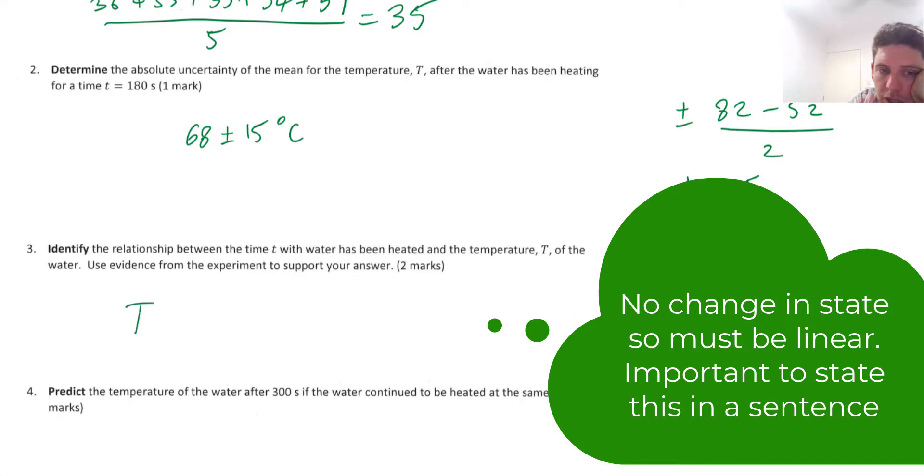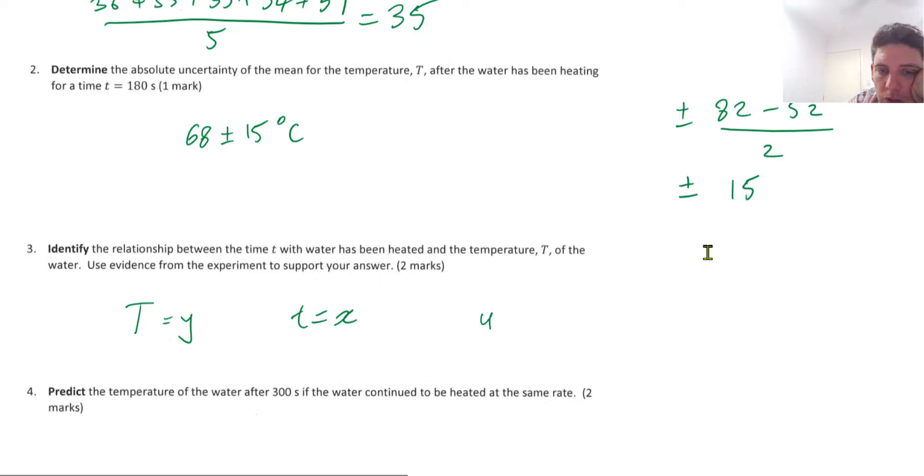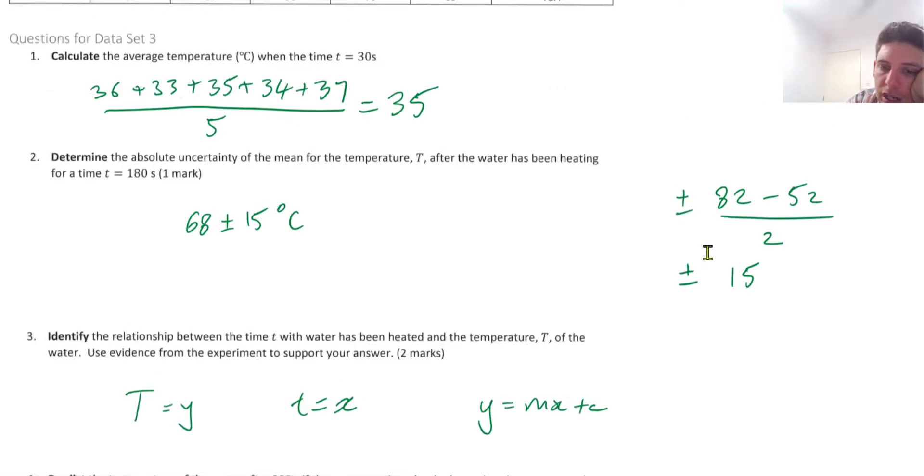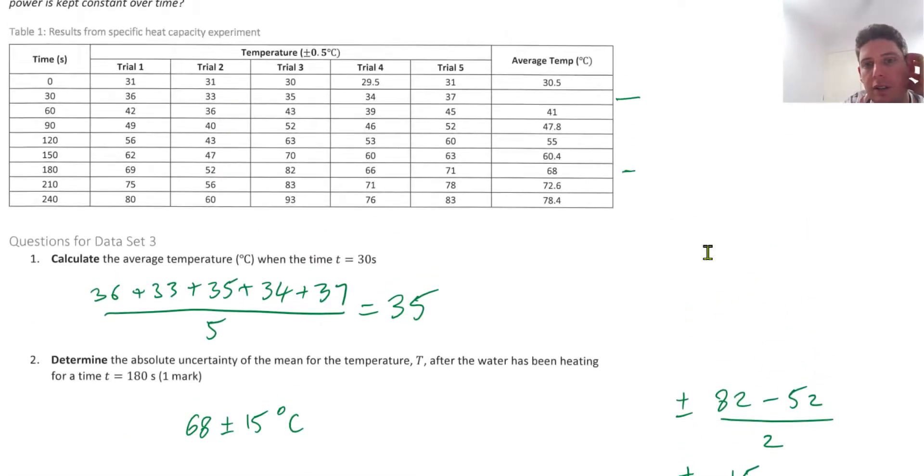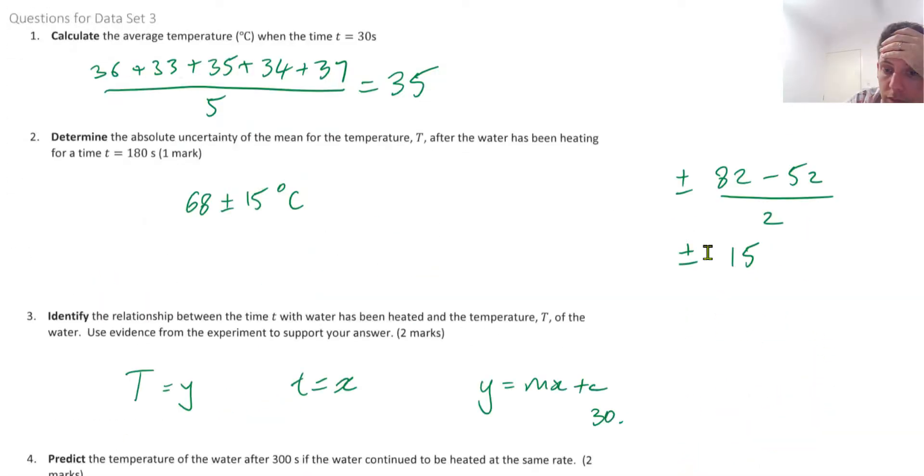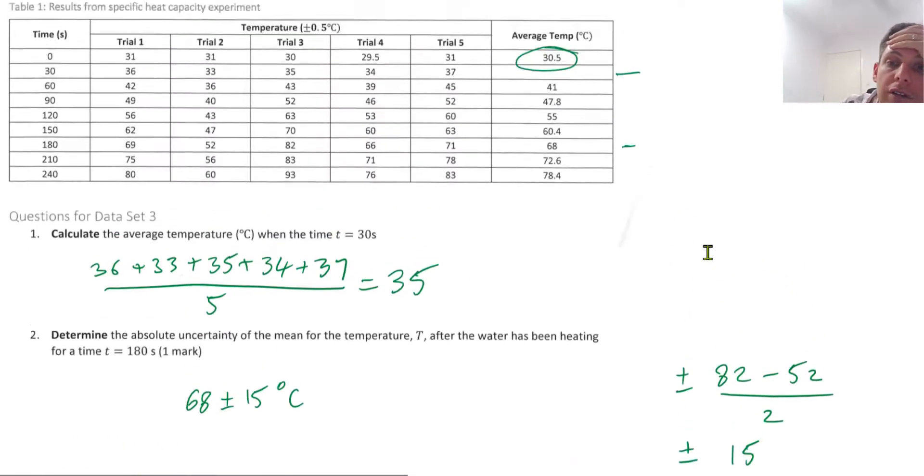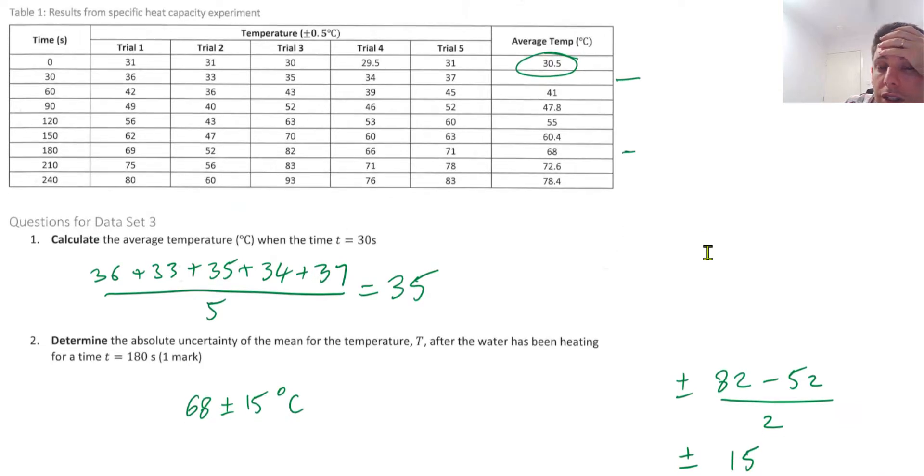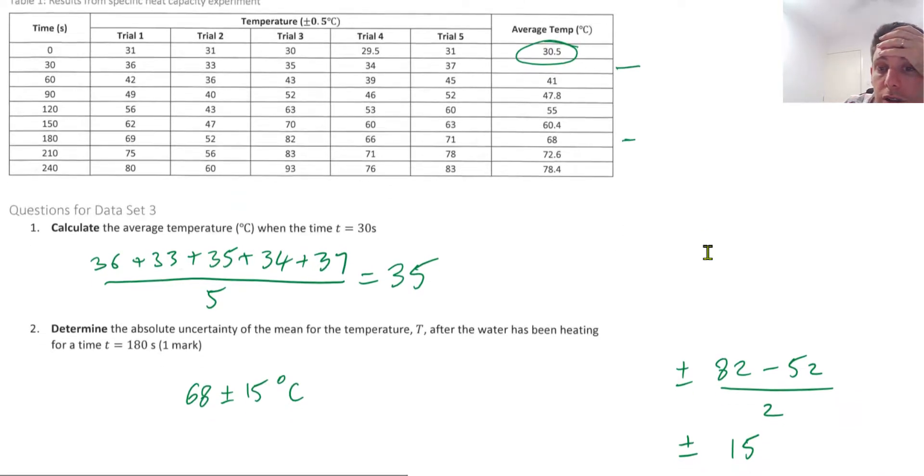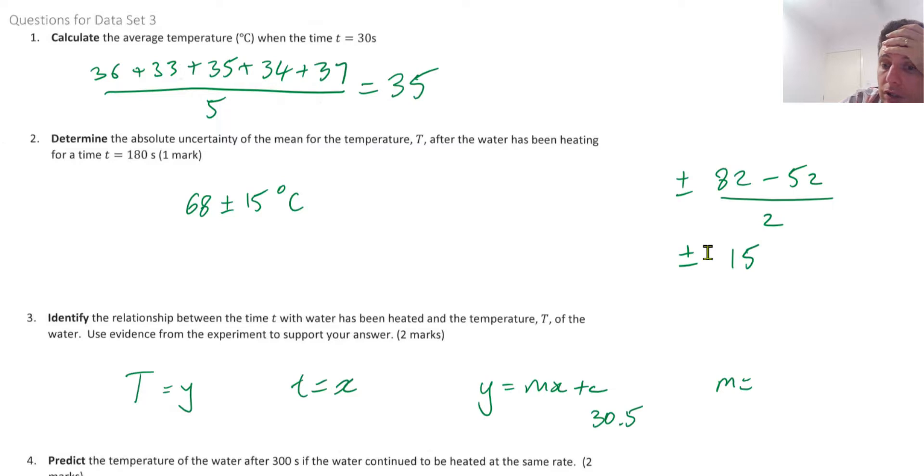So we could show that say T is Y and time is X. So you want some sort of relationship like this. So we have a starting temperature which is the plus C, 30.5. We just need to figure out the gradient which is the rise over run.